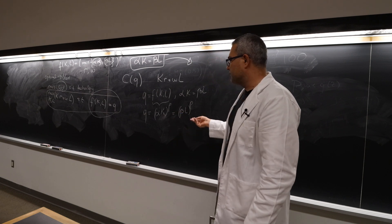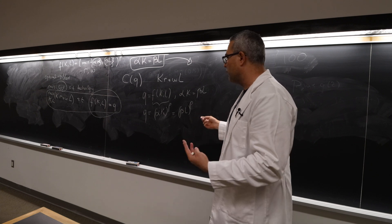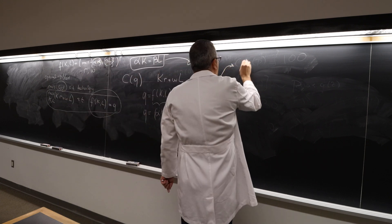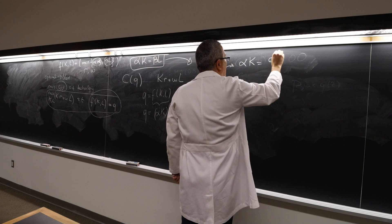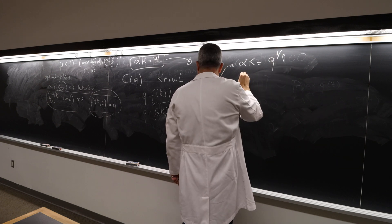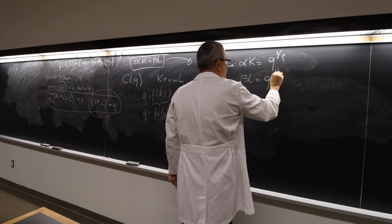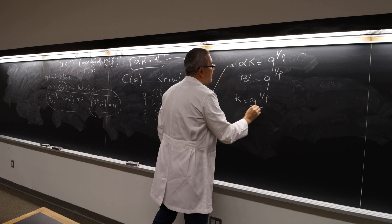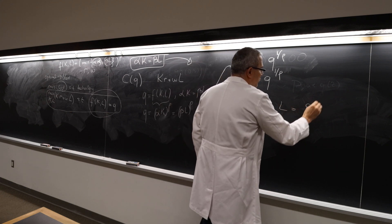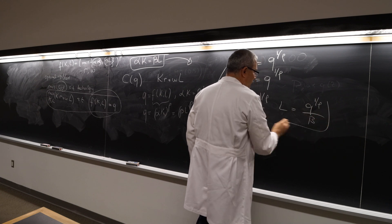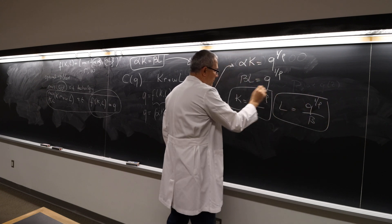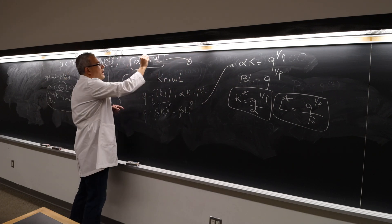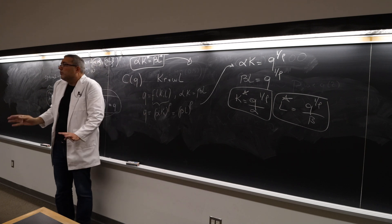Take the power of 1 over rho on both sides. That means alpha K equals Q to the power 1 over rho, and beta L equals Q to the power 1 over rho. Therefore, K equals Q to the power 1 over rho divided by alpha, and L equals Q to the power 1 over rho divided by beta. These are the optimal capital and labor levels — K star and L star.